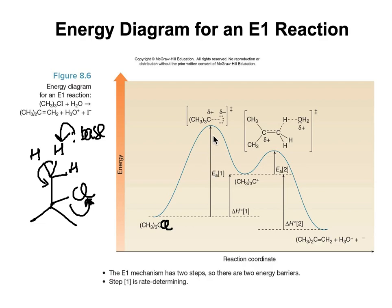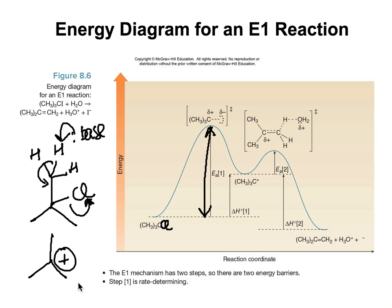The rate determining step is the one with the largest activation energy. The intermediate is the carbocation, which in this case is very stable because it's tertiary — the more substituted it is, the more stable it is. The second step, where the base abstracts the hydrogen and forms the double bond, takes less energy, so that activation energy is smaller.